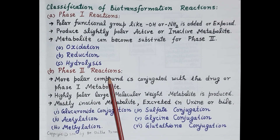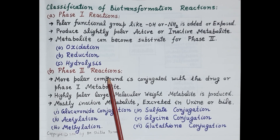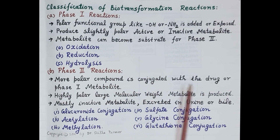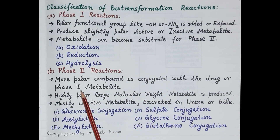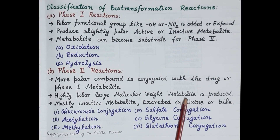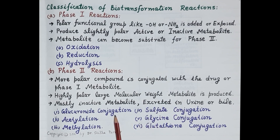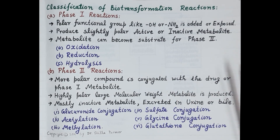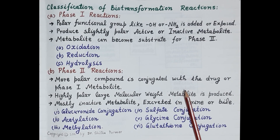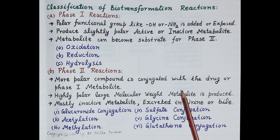Phase two reactions produce very polar, mostly inactive metabolites that are readily excreted in the urine. These reactions are also called synthetic or conjugation reactions, where a more polar compound is conjugated with a drug or with the phase one metabolite of the drug. This produces a highly polar, high molecular weight, mostly inactive metabolite that is excreted primarily in the urine or in bile. Conjugation reactions include glucuronide conjugation, acetylation, methylation, sulfate conjugation, glycine conjugation, and glutathione conjugation. For a detailed description of phase one and phase two reactions, you can watch the dedicated videos on biotransformation phase one and phase two reactions.